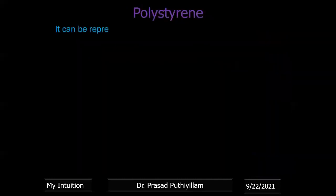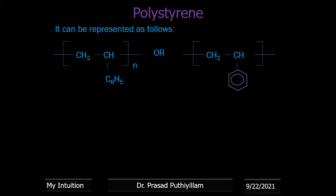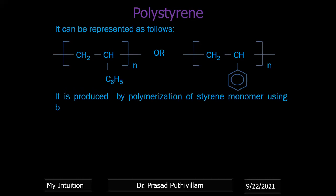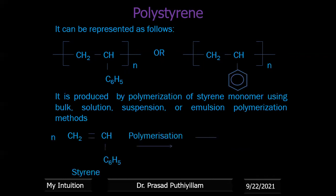The next polymer is polystyrene. Similar to polypropylene, but instead of a CH3 group, it has a phenyl group C6H5 — represented as [CH2-CH(C6H5)]n. It is produced by polymerization of the monomer styrene using bulk polymerization, solution polymerization, suspension polymerization, or emulsion polymerization. N molecules of styrene undergo polymerization to give polystyrene.